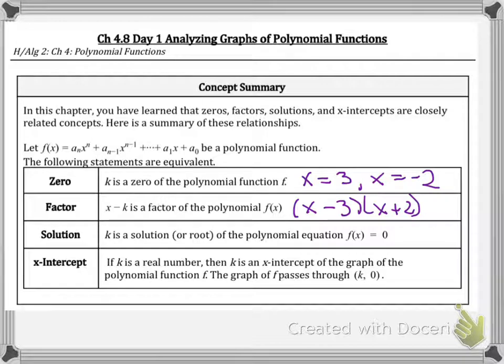Then k is a solution or root of the polynomial equation. What we're really looking for is when that value equals 0. When does y equal 0? So you would have f of 3 equals 0, or f of negative 2 equals 0.